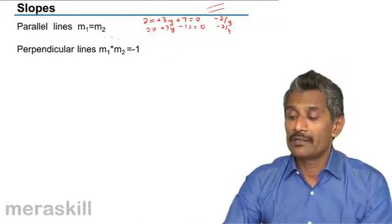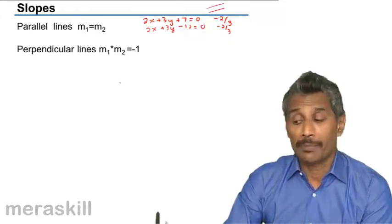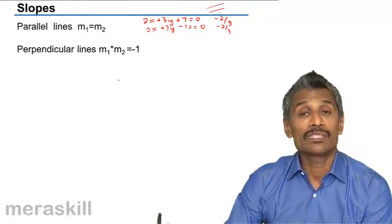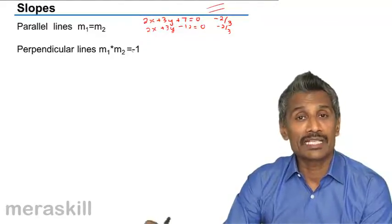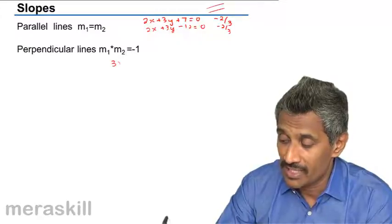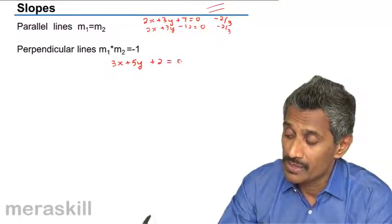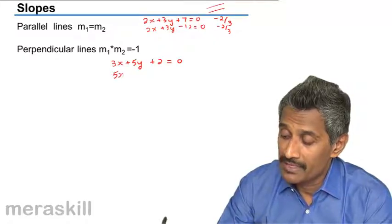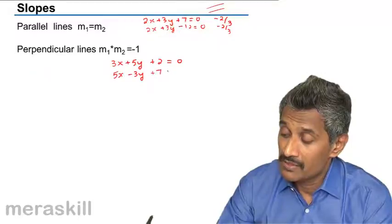So whenever two lines are parallel, the slopes are equal. And suppose the lines are perpendicular, the product of the slopes is minus 1, or the slopes are negative reciprocals of each other. So let's take the case 3x plus 5y plus 2 is 0 and 5x minus 3y plus 7 is 0.